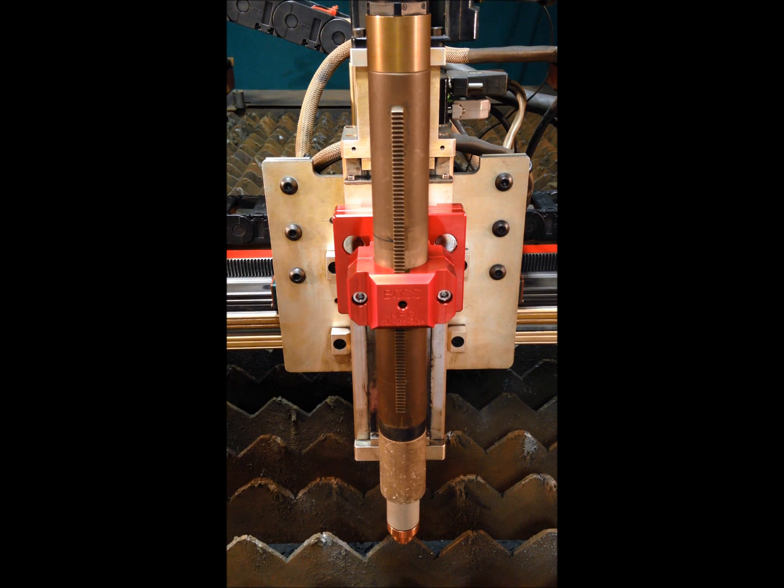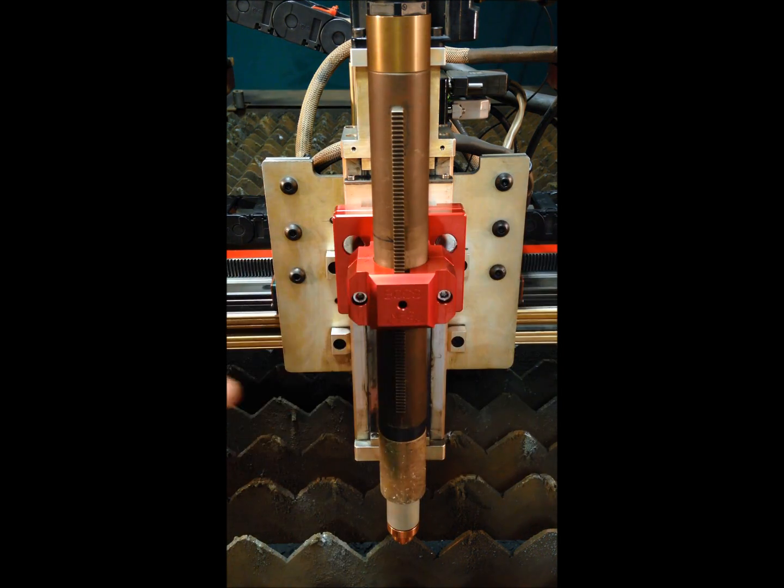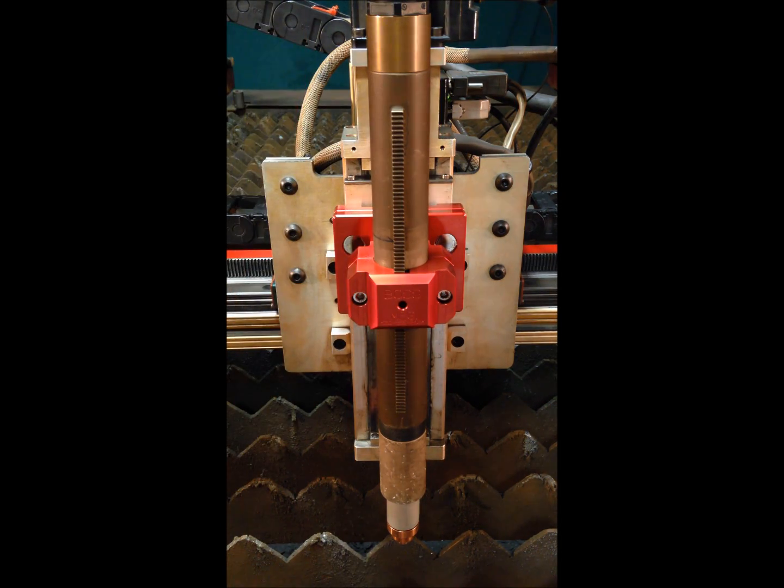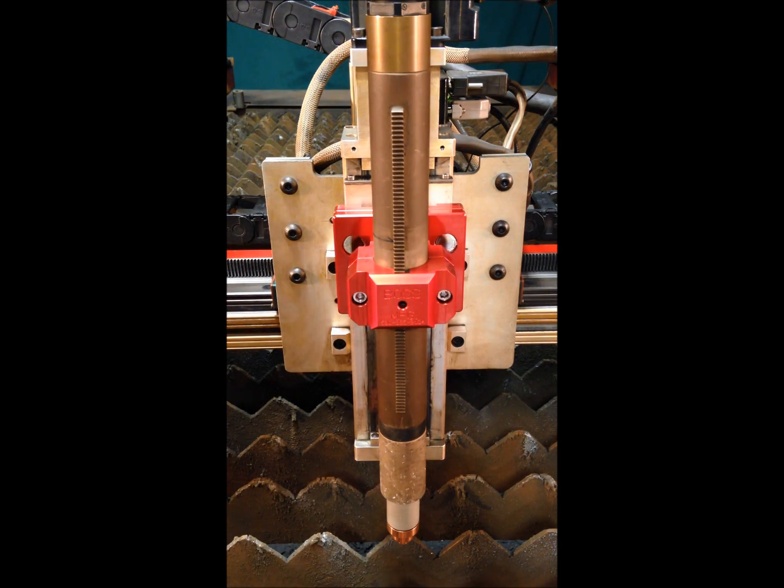Your plasma torch can be set to bevel at 15, 30, and 45 degrees in both directions in relation to your Y-axis, allowing you to bevel in your X long axis. It's a very simple procedure.